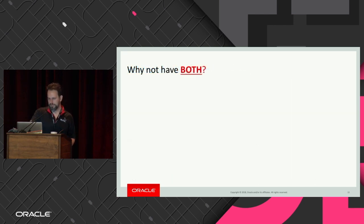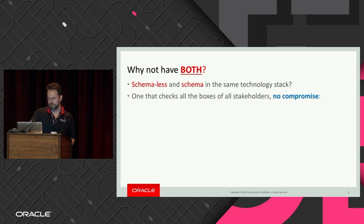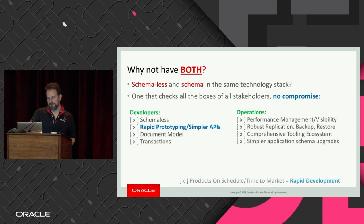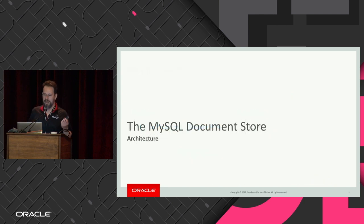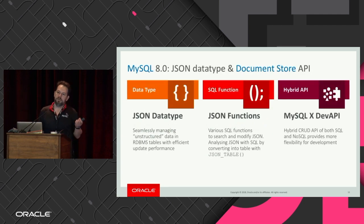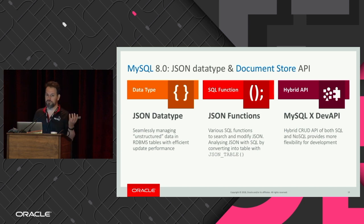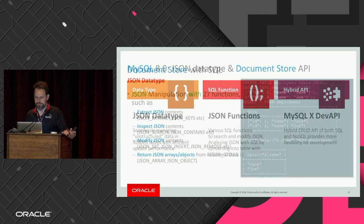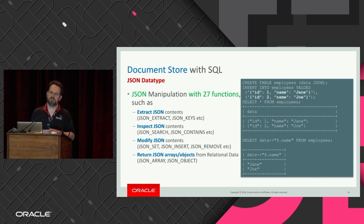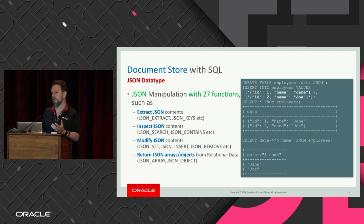The three things that make up the document store are: the JSON data type, being able to store JSON natively inside MySQL; and there's more to it than just treating JSON as a text file. A lot of databases treat JSON as a blob or text file, but in MySQL when you input JSON it's a native JSON data type, so it will make sure what you enter is valid and well-formed JSON.